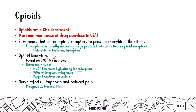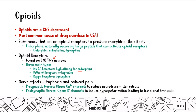Opioids affect the presynaptic nerve by closing calcium channels, which prevents neurotransmitters from being released into the synaptic cleft. On the postsynaptic nerve, they open potassium channels to hyperpolarize the nerve, making it harder to produce signal transduction. So opioids make it harder for a nerve to fire by closing calcium channels presynaptically and opening potassium channels postsynaptically.